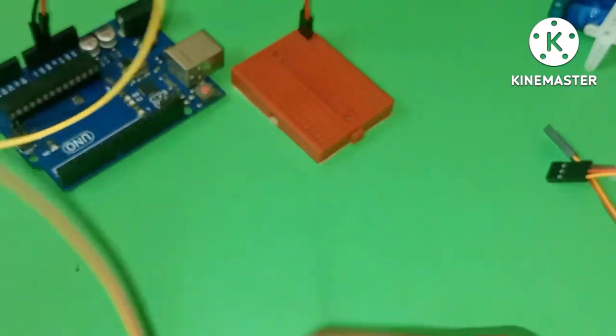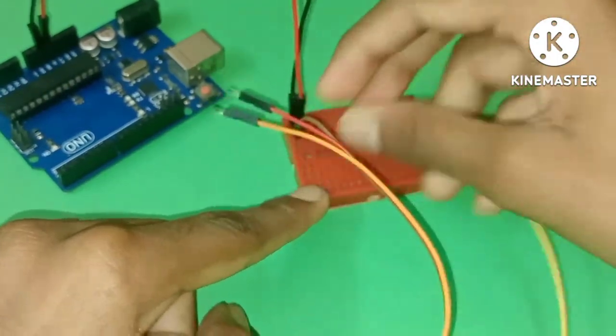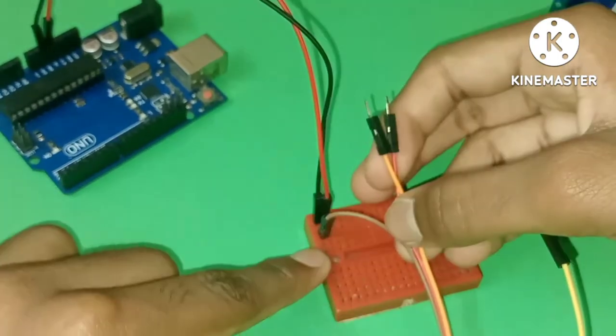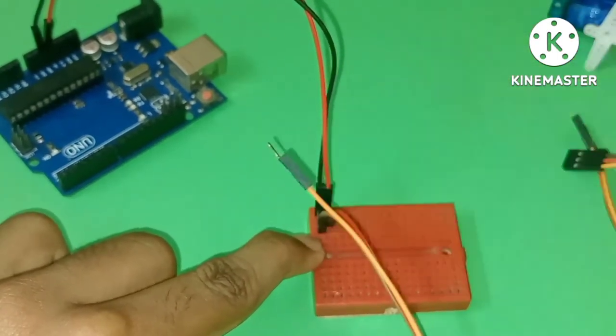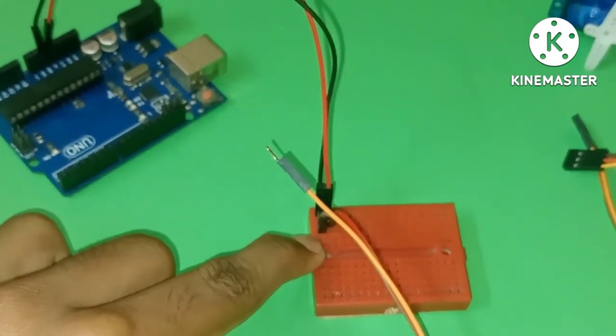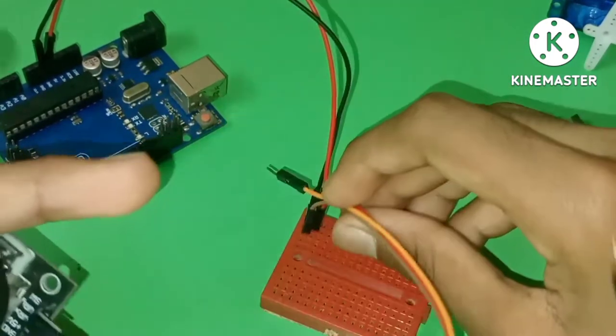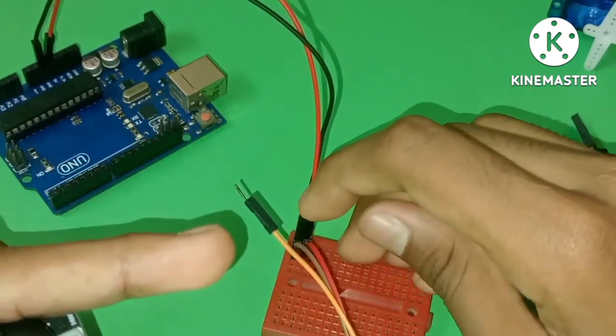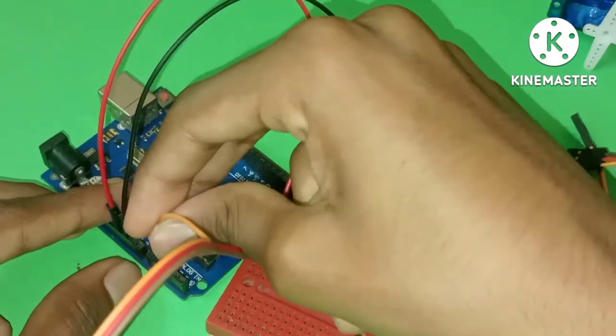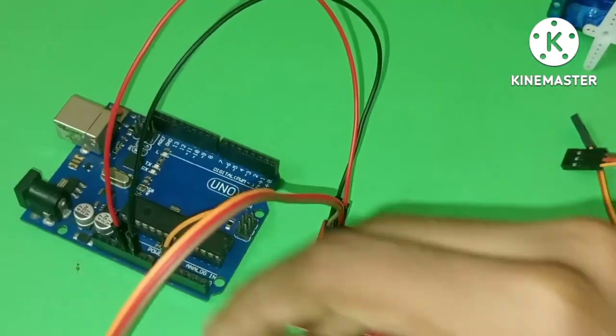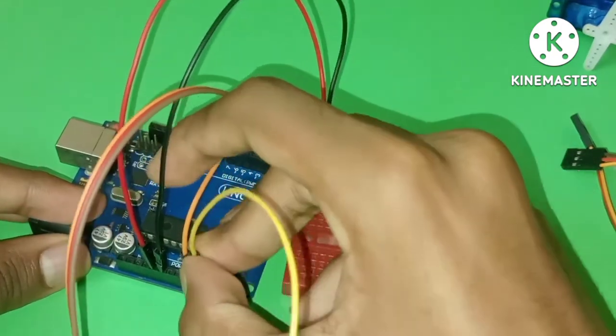Let's connect the ground wire first. Connect VRX to analog pin zero on the Arduino, and connect the y-axis VRY to analog pin one.